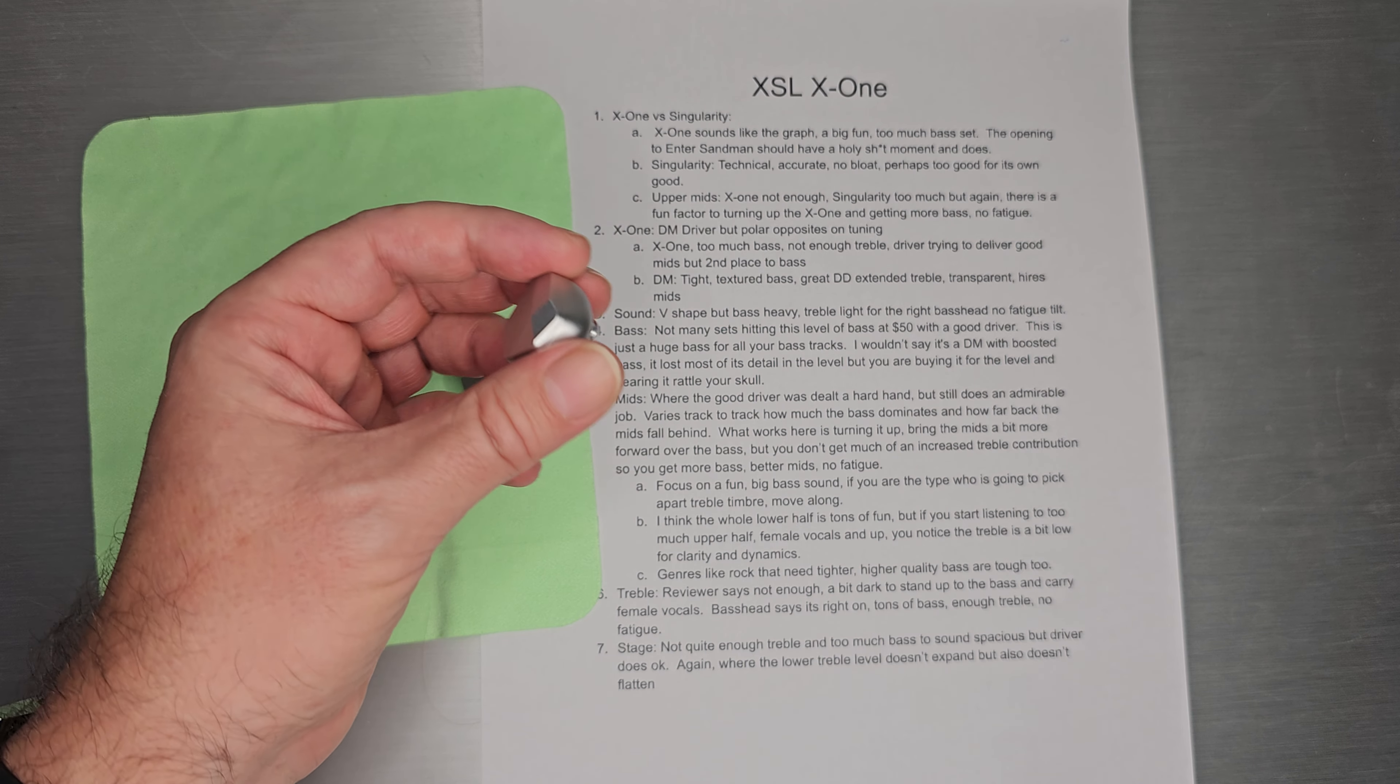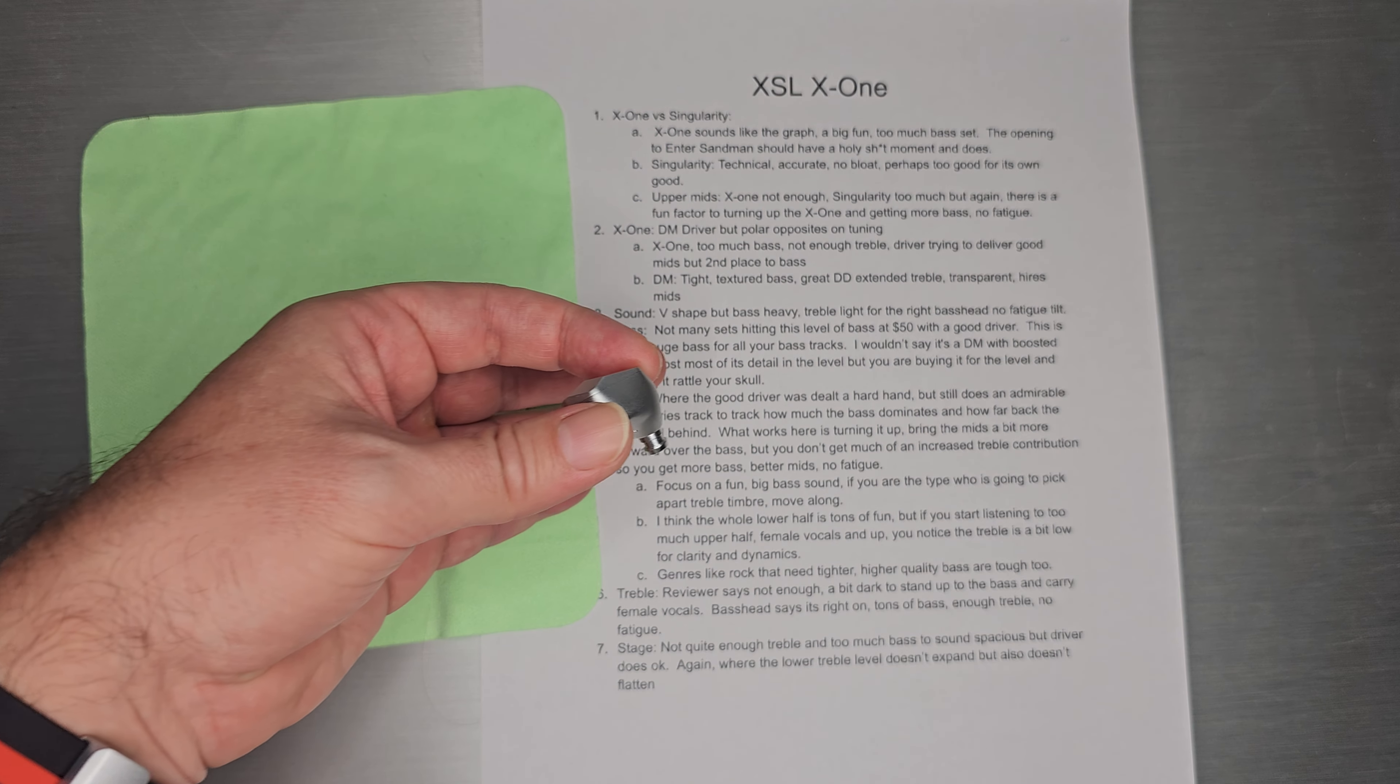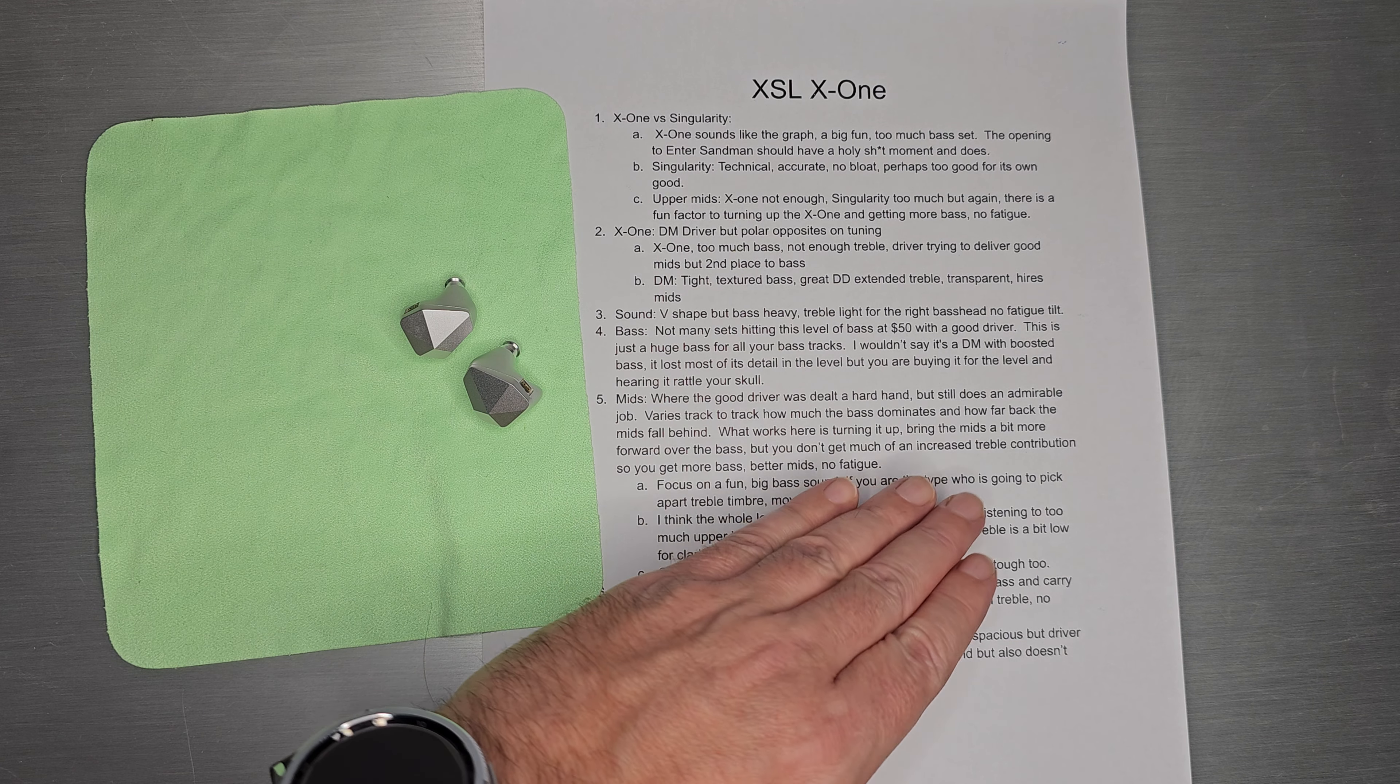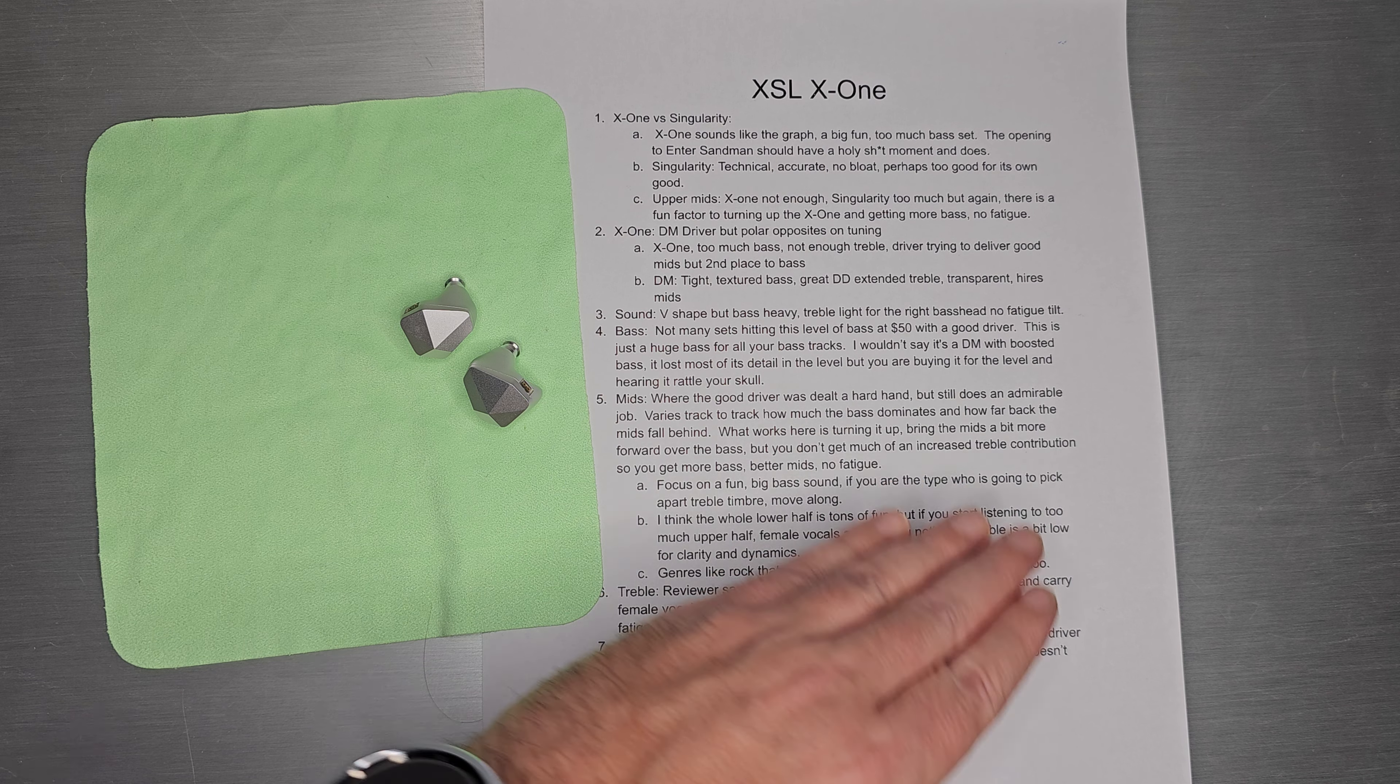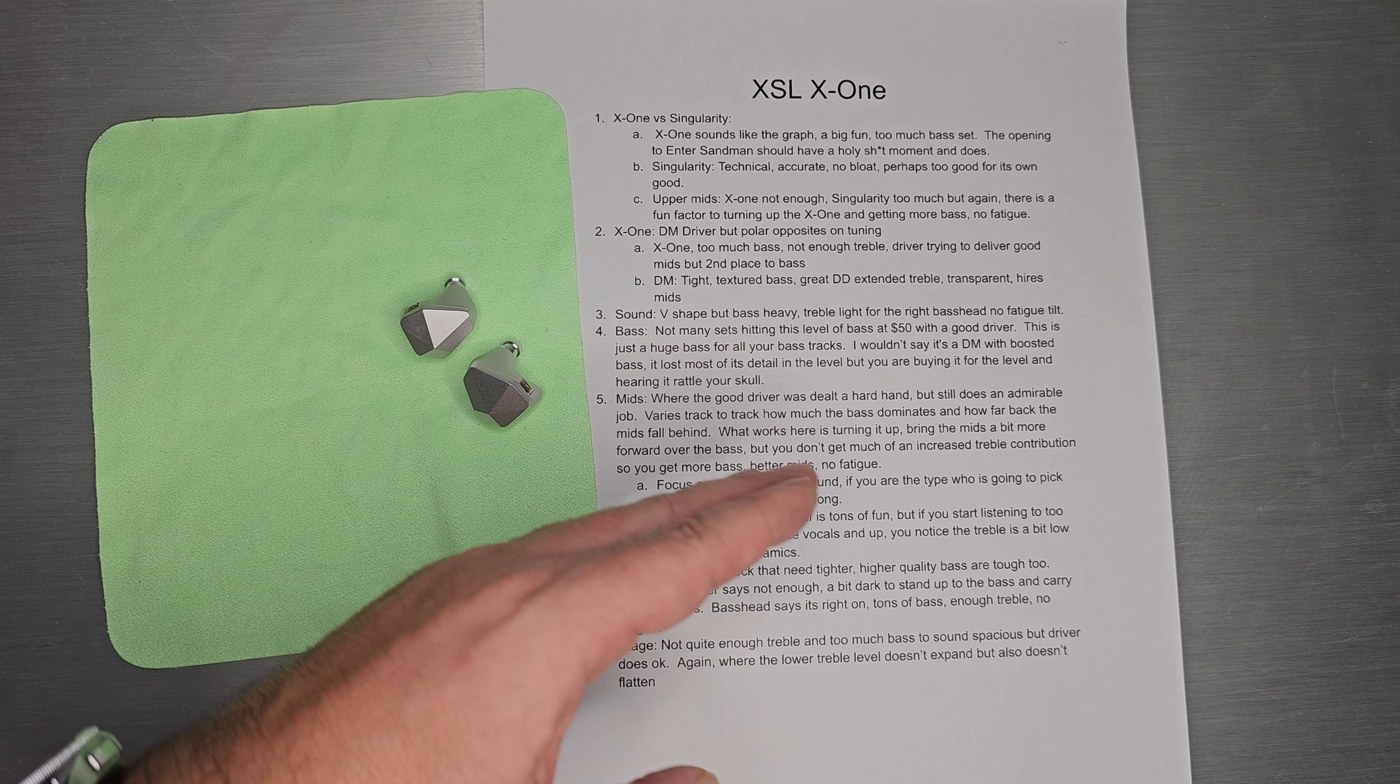You can bring the mids up with a little bit more volume. The mids come a little bit forward over the bass. You don't get as much increased treble contribution the way it all works out. So bass comes up, the mids fall a little bit more forward. The treble is still a little bit low, so it doesn't really fatigue you.